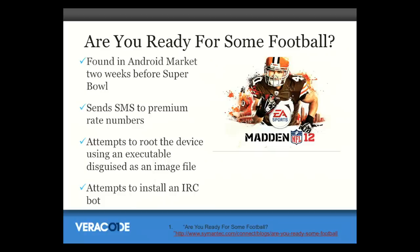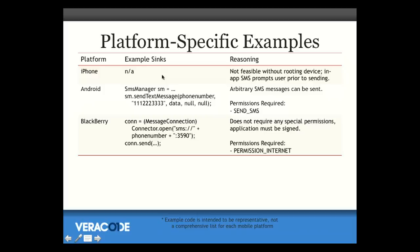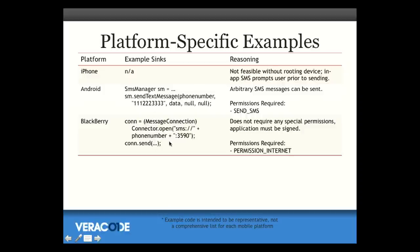We saw the same thing happen at the last Super Bowl — there was a bogus version of Madden football game that sent premium SMS text messages and actually tried to create a botnet on the device. Interestingly, Apple was pretty smart and doesn't allow applications to send SMS text messages at all — no app can do it. That's a great way of getting rid of a whole class of vulnerability. But on Android you can do it, and on BlackBerry you can do it too. Interestingly, on BlackBerry all you need is internet permissions to send an SMS text message.